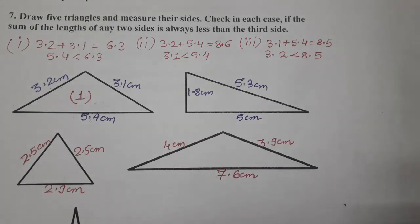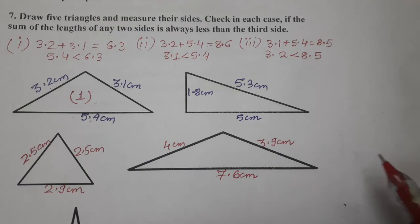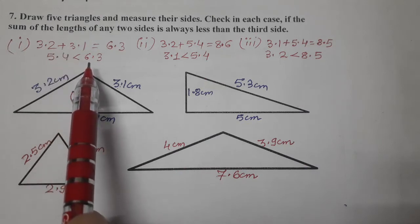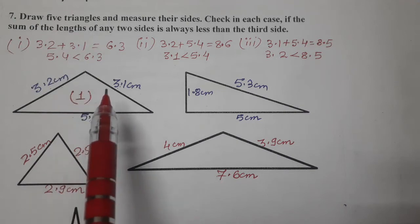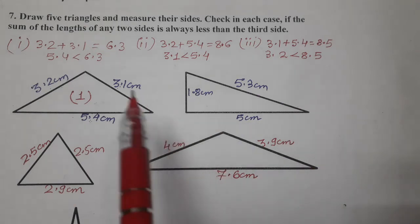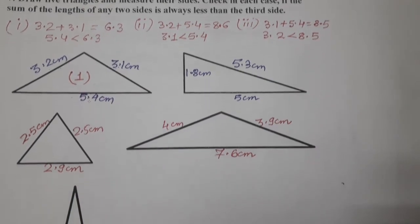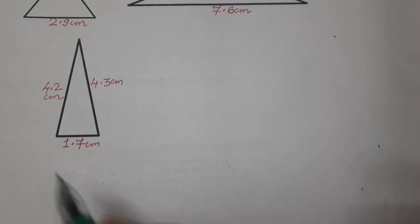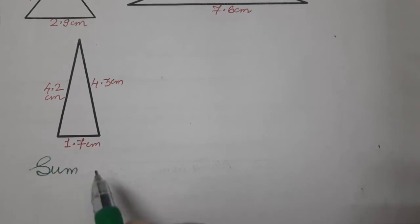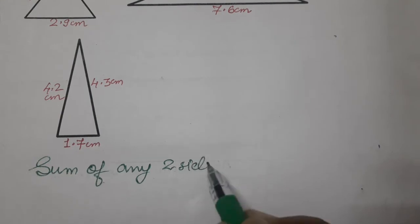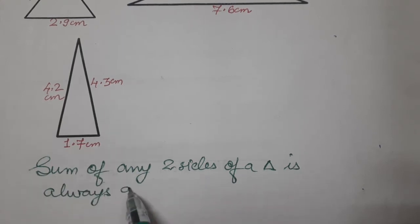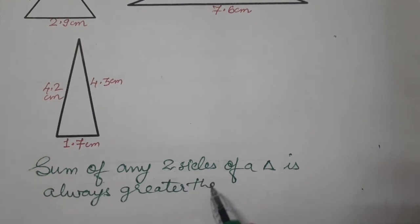Similarly, you have to do this for the other four triangles as well — that is your homework. You will always get the same result: the sum of any two sides is greater than the third side. So the conclusion we can write is: the sum of any two sides of a triangle is always greater than the third side.